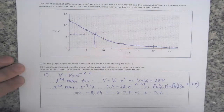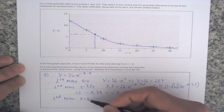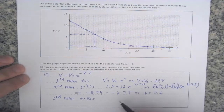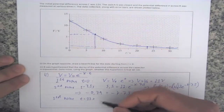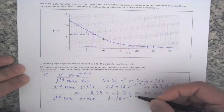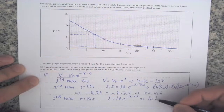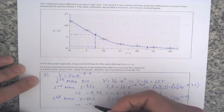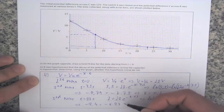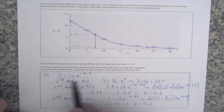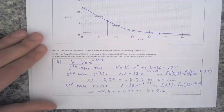Taking a third point at T equals 23 seconds, the voltage is approximately 1 volt. So 1 equals 12 times e to the power of negative K times 23. Taking the natural logarithm of both sides again: ln(1/12) equals negative K times 23, giving minus 2.4 equals negative K times 23. This also gives K equals 0.1. Since K is the same constant at both points, this proves the relationship is indeed exponential.